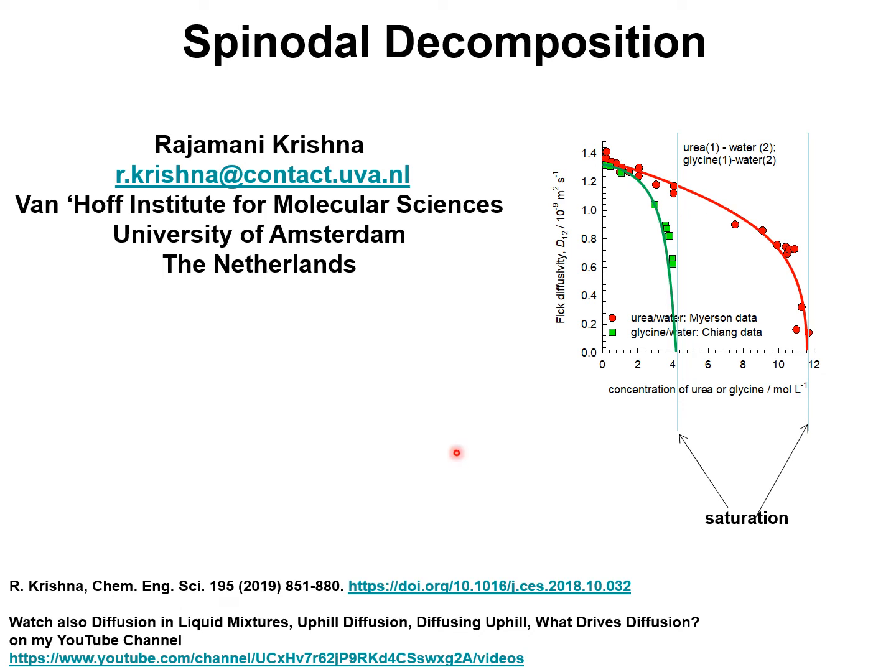Experimental data on the Fick diffusivity of binary mixtures that experience phase transition show that the Fick diffusivity values reduce to zero as the concentrations approach saturation. As an example, let's look at the glycine water diffusivity of glycine water shown by the green squares here or diffusivity of urea water shown by the red circles.